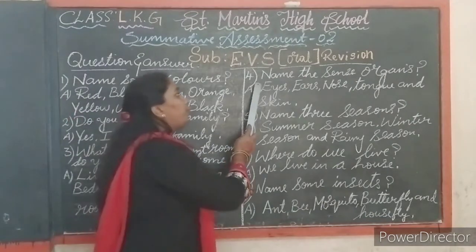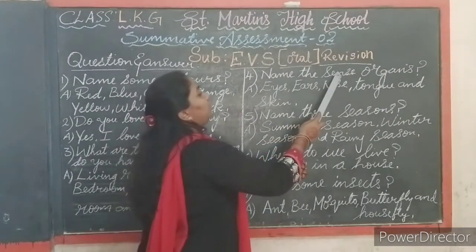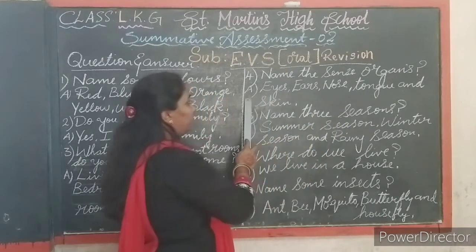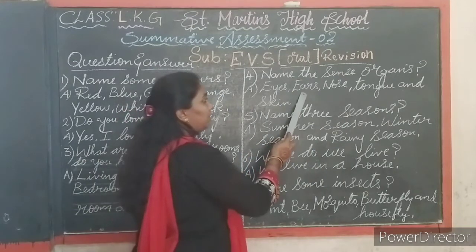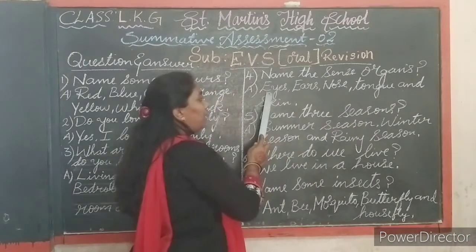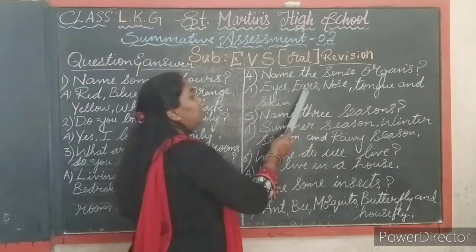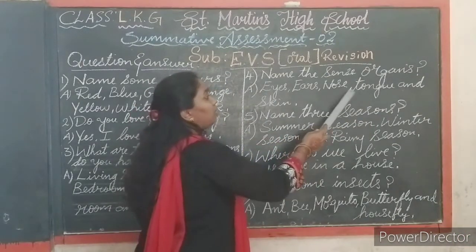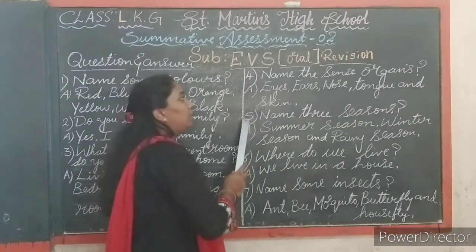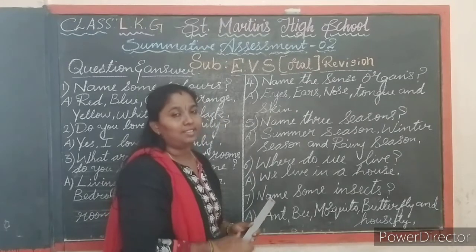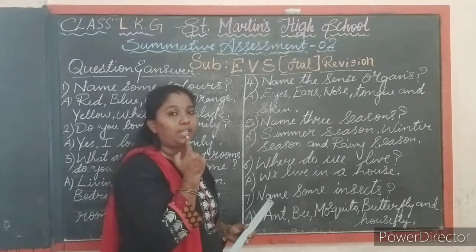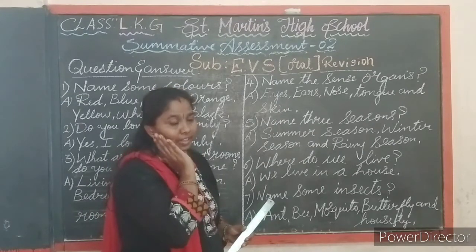Next question. Fourth question: name the sense organs. Answer — eyes, ears, nose, tongue and skin. Now tell me children, what are the sense organs? Yes — eyes, nose, ears, tongue and skin.